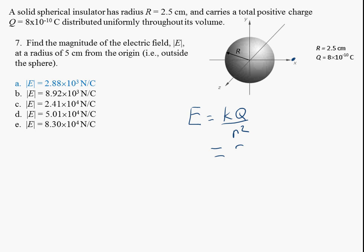In this case, k is nine times ten to the ninth always, the charge enclosed is eight times ten to the minus tenth Coulombs, and the distance that we want this at is five centimeters, so 0.05 meters.